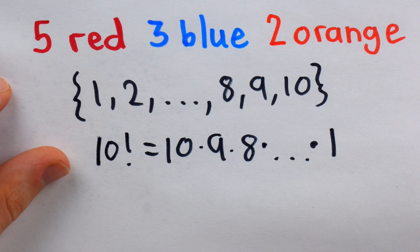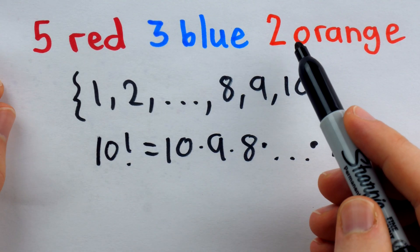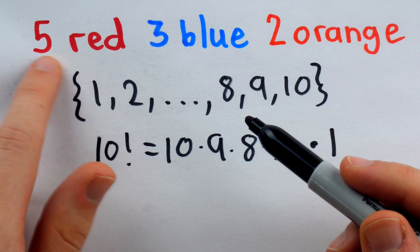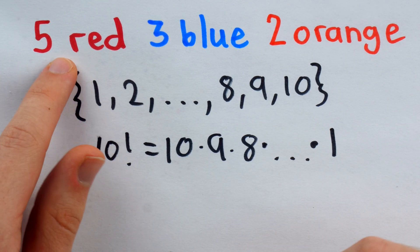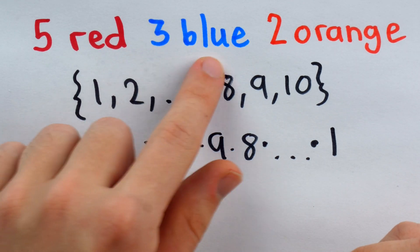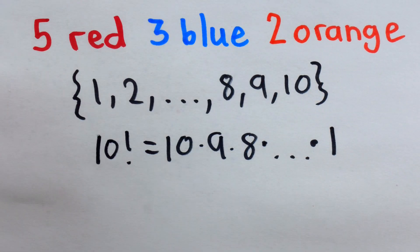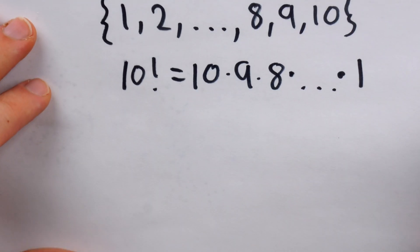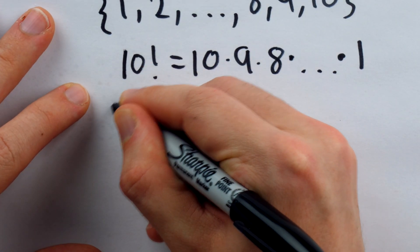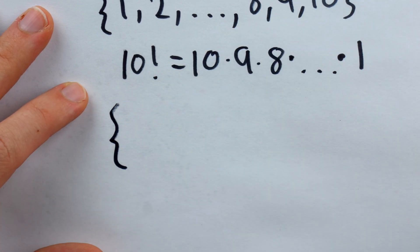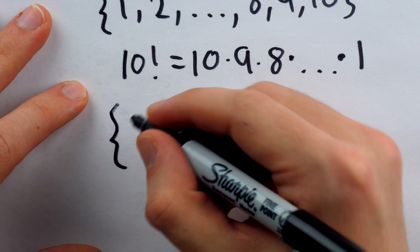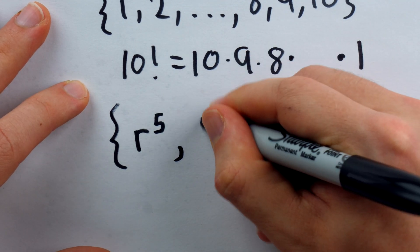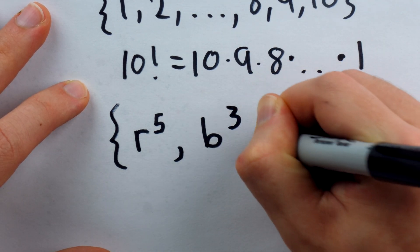The problem here, of course, is that although we do have 10 objects, they're not 10 distinct objects. Five of the objects are identical red flowers, three of the other objects are identical blue flowers, and so on. So in this problem, instead of counting the number of orderings of a traditional set, we're actually counting the number of orderings of what's called a multi-set, where each object may appear multiple times. We can denote this situation like this.